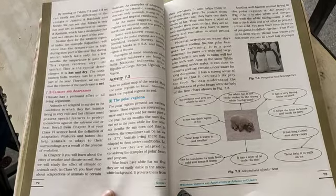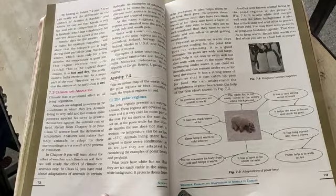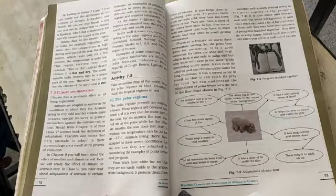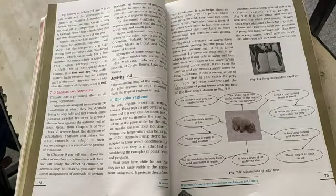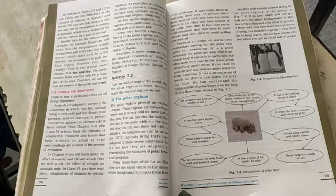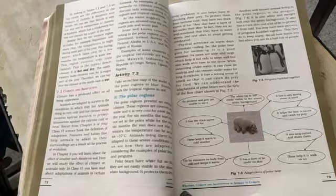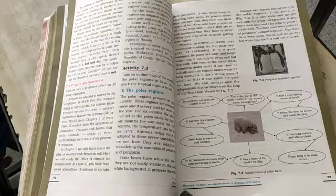In winter, the temperature can be as low as minus 37 degrees centigrade. Those animals which are living in these conditions have adapted themselves so that they can easily cope up with the situations and sustain themselves in this area. Another well-known example that lives in the polar region is the penguin.